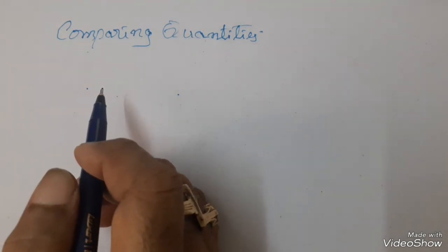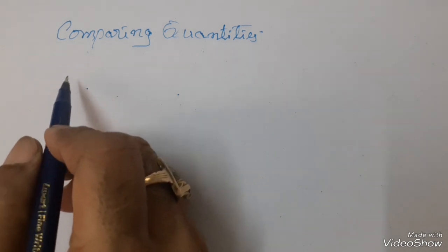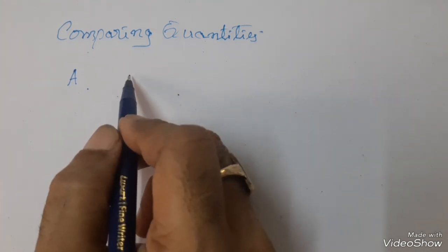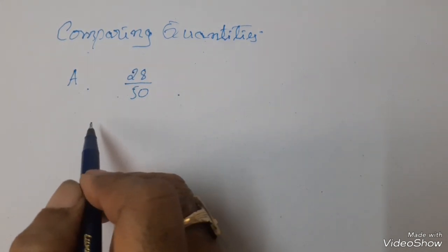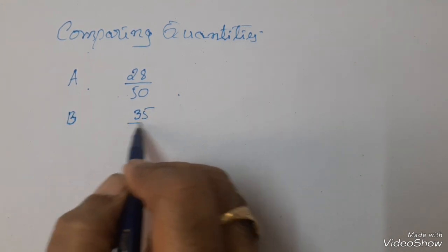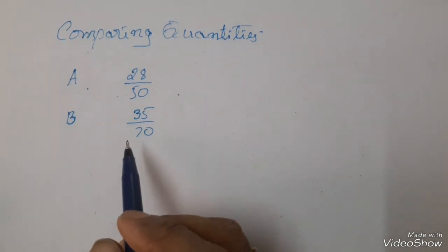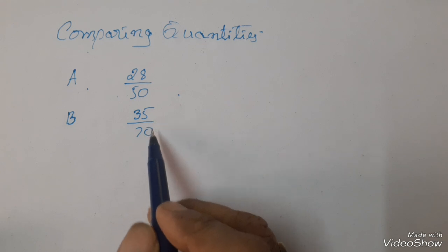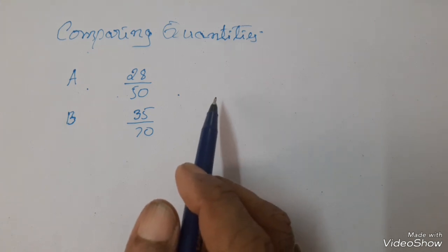Now, comparing quantities. What is the need of comparing two quantities? For example, A got 28 marks out of 50 in one subject, and B got 35 marks out of 70. Now, who got more marks? One of the methods to compare quantities is percentages.